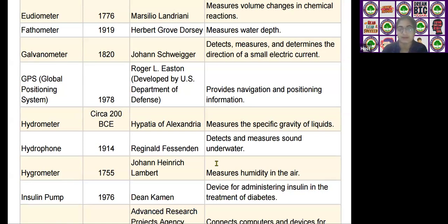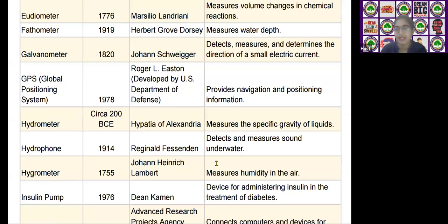The next scientific device is the hydrometer, invented by Hypatia of Alexandria in the year 200 BCE. It measures the specific gravity of liquids.